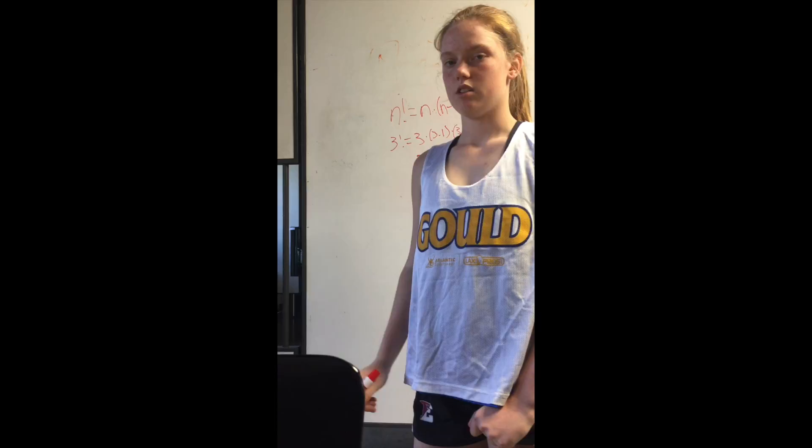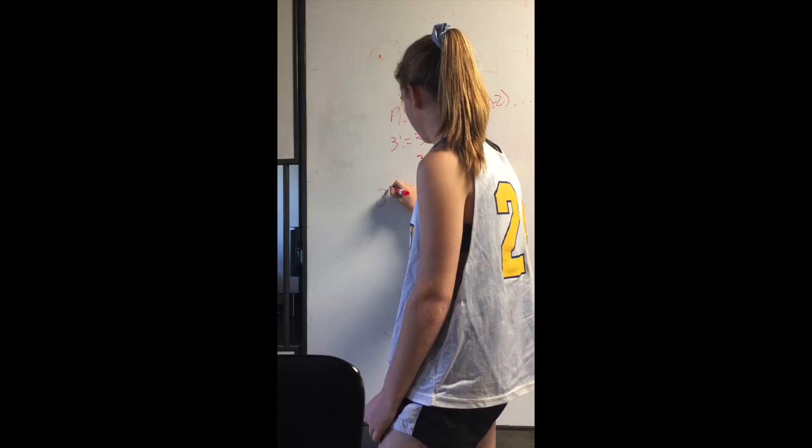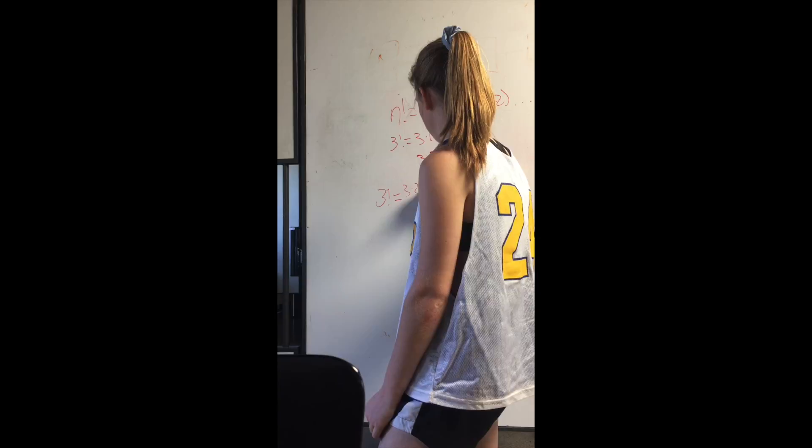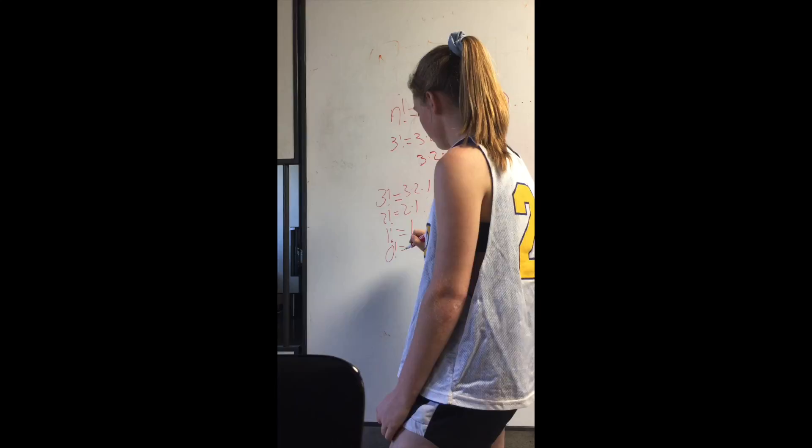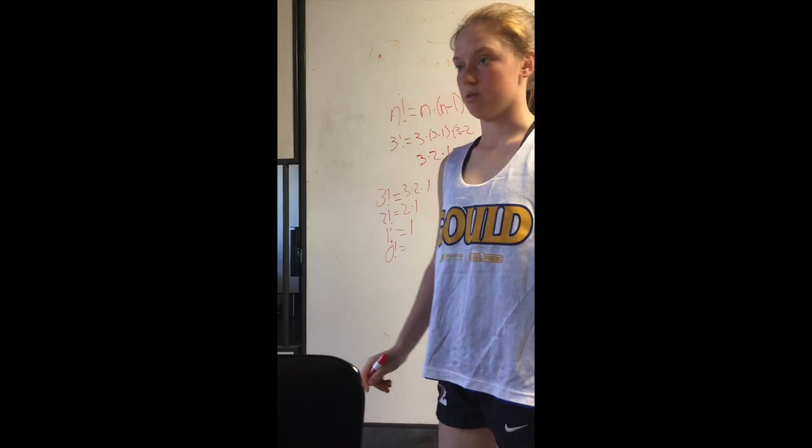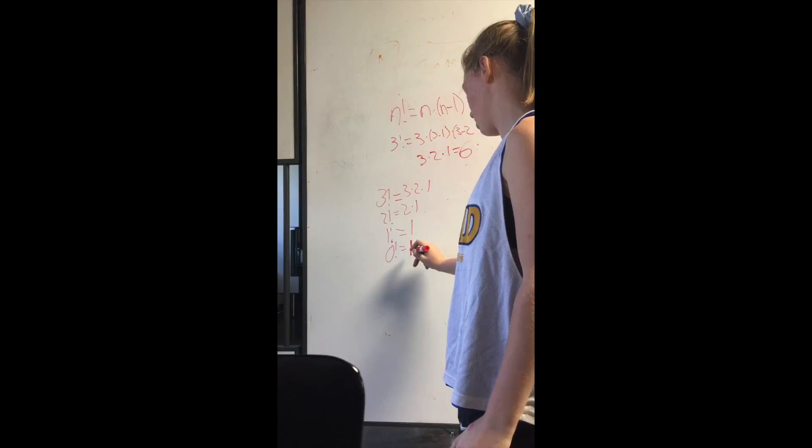Obviously, 3 factorial equals 3 times 2 times 1. 2 factorial equals 2 times 1. 1 factorial equals 1. If we had 0 factorial, what would it be? If we look at the pattern, some people might think it's 0. But that's actually not the case. 0 factorial is 1.